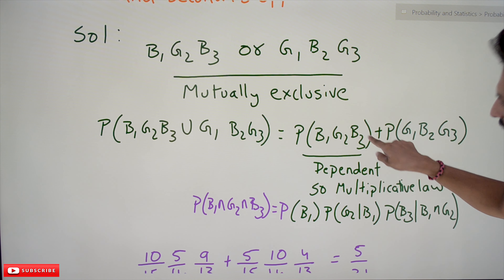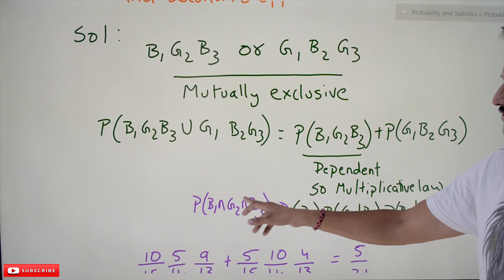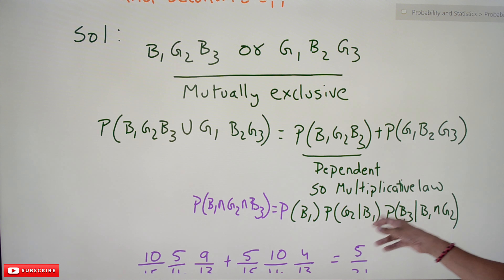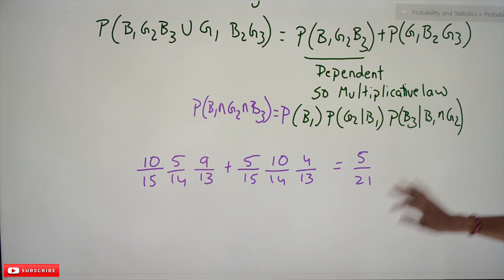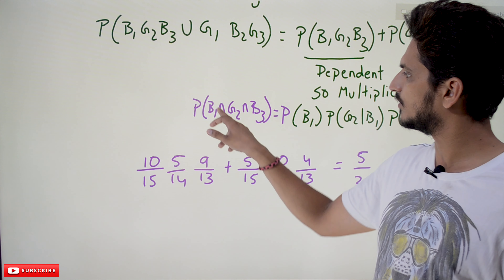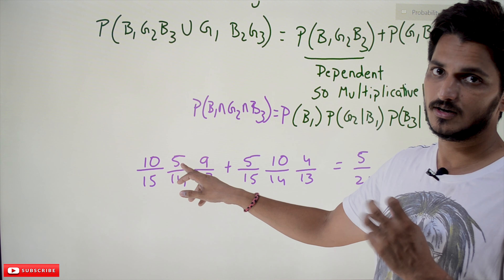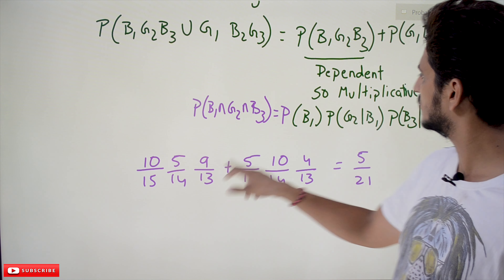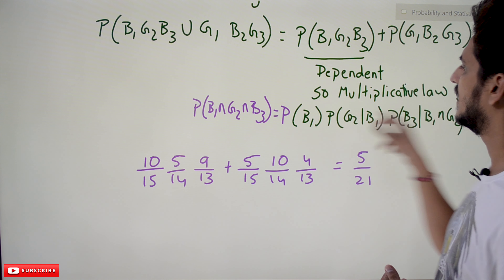For P(B1G2B3): this equals P(B1) × P(G2|B1) × P(B3|B1∩G2), from the multiplicative law. With 10 boys and 5 girls (15 total): P(B1) = 10/15, P(G2|B1) = 5/14 (one boy removed), P(B3|B1∩G2) = 9/13 (9 boys left). We already covered this in our last class so we won't explain again.